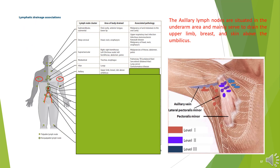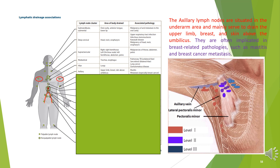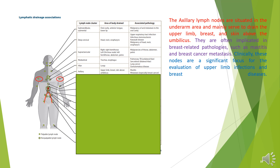The axillary lymph nodes. The axillary lymph nodes are situated in the underarm area and mainly serve to drain the upper limb, breast, and skin above the umbilicus. They are often implicated in breast-related pathologies, such as mastitis and breast cancer metastasis, and are a significant focus for evaluation of upper limb infections and breast diseases.